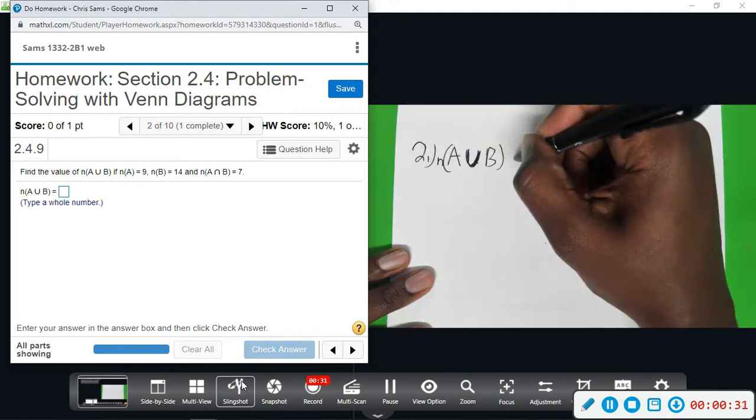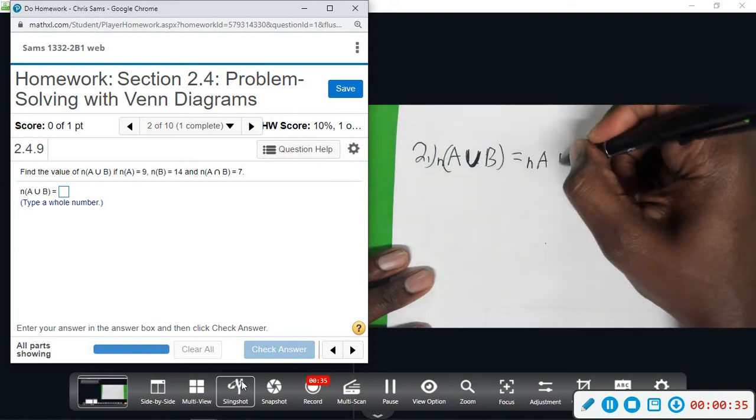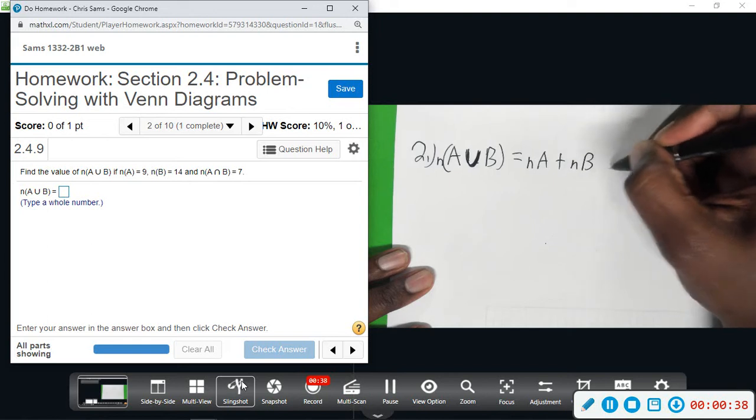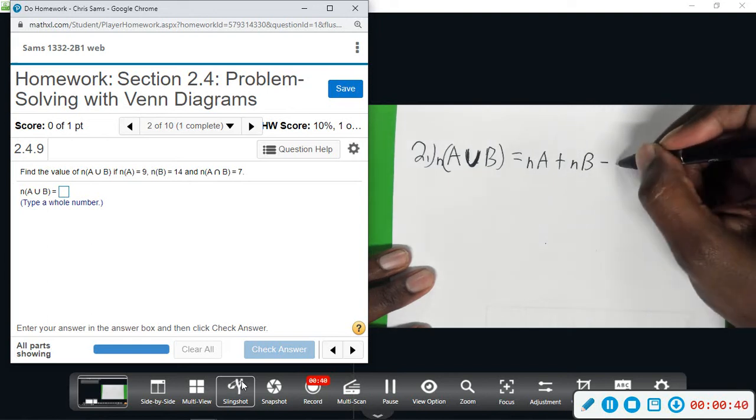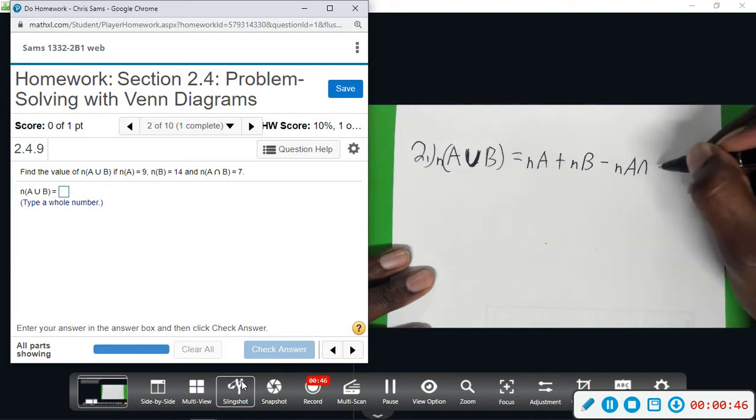A union B, number of elements, that is equal to the number of elements in A plus the number of elements in B minus the number of elements in A intersect B.